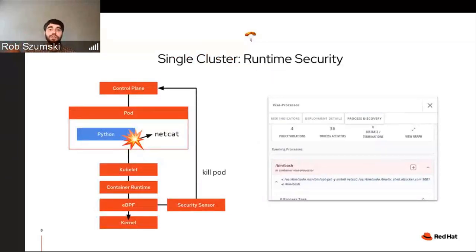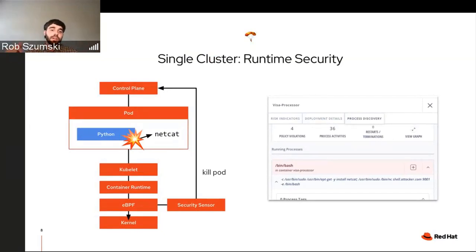Let's parachute down to what this looks like in a single cluster. Runtime security is a new capability for OpenShift. Say we've got a pod with Python and an application, and there's a vulnerability that gives local execution rights inside that pod. If you're moving around in this environment, you might pull down a netcat binary and use it to wreak havoc. An eBPF probe installed as a security sensor will actually block that pod from executing netcat, protecting network traffic and preventing lateral movement.